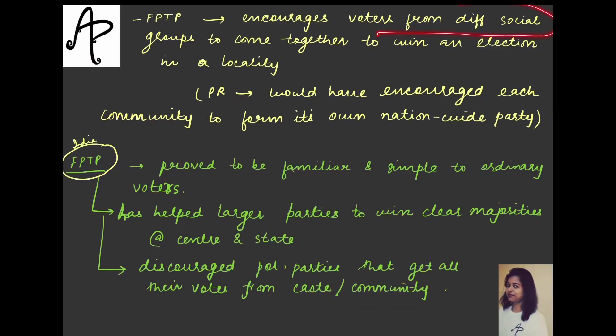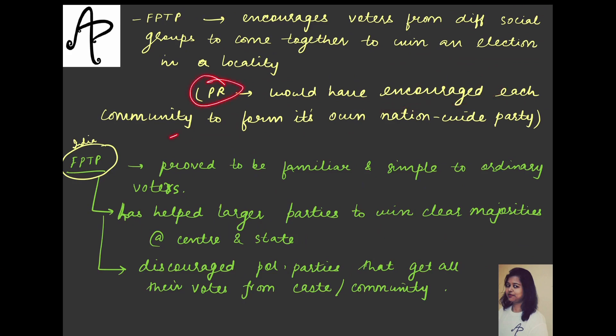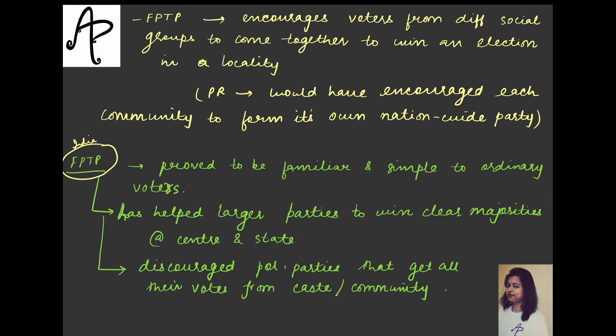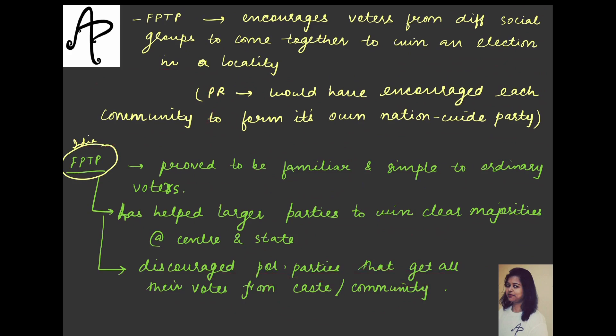FPTP also encourages voters from different social groups to come together to win an election in a locality. PR would encourage each community to form its own party, which would not accommodate social diversity. FPTP in India has proved familiar over time — ordinary voters easily understand it. It has helped larger parties win clear majorities and discouraged parties that get all their votes from only one particular caste or community.